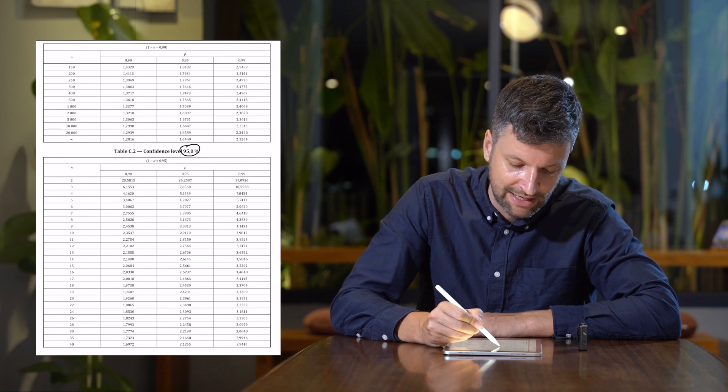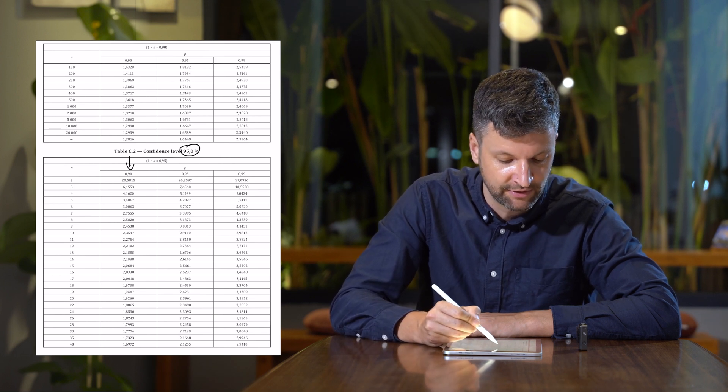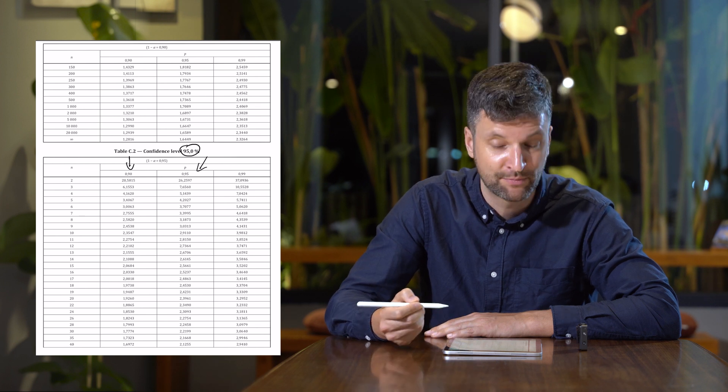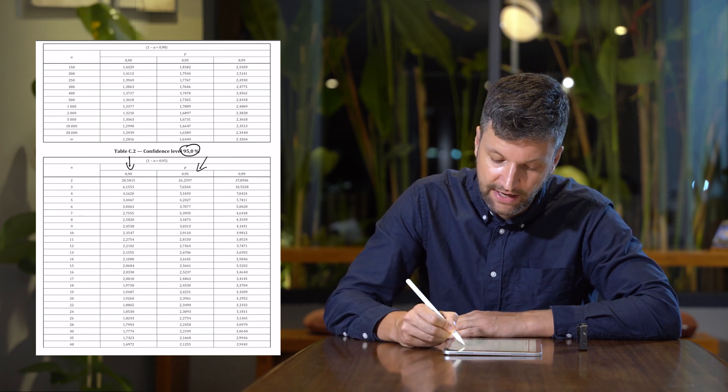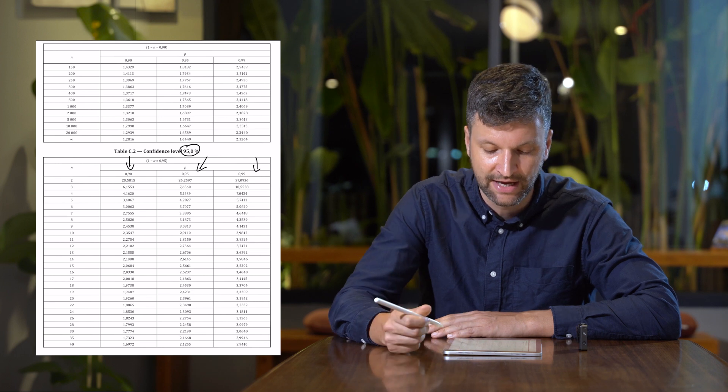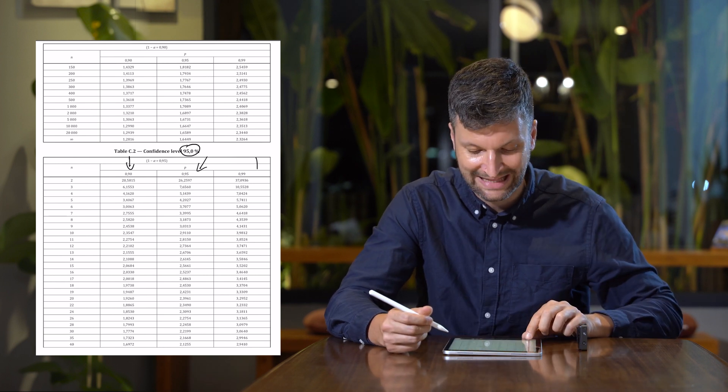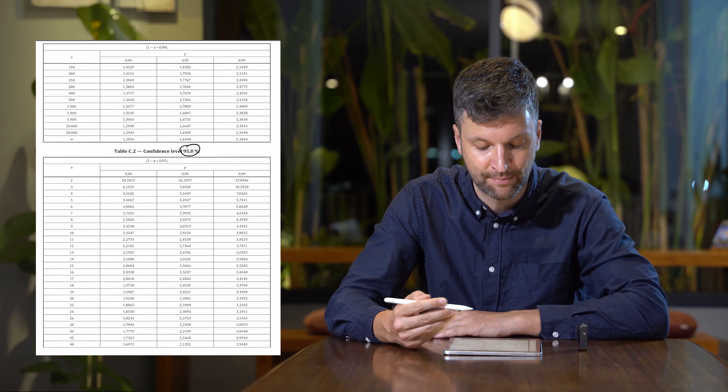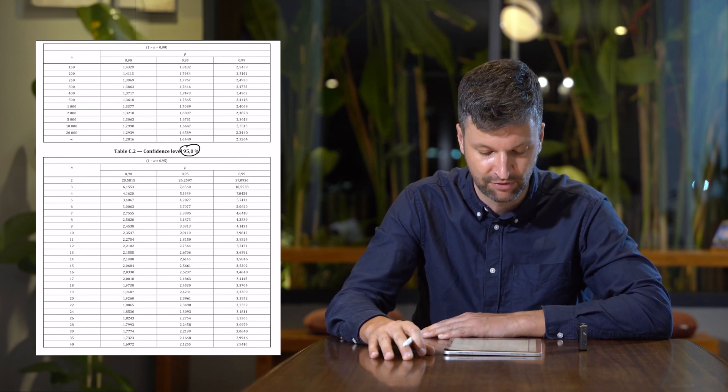So in Table C2, we can see three more columns. The probability here is 90%, in the middle is a probability level of 95%, and to the very right we have a probability level of 99%. So for this example, we stay with 95% confidence and 95% reliability.